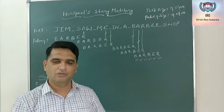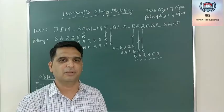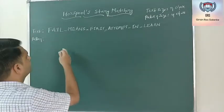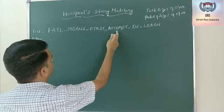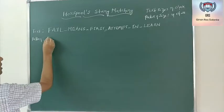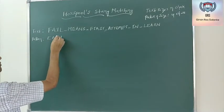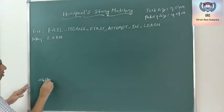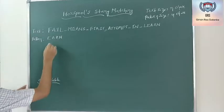Second example: text is 'fail means first attempt in learn', pattern is 'earn' of size 4. First step is to build the shift table for all characters. R is 1, A is 2, E is 3, N is 4, and all other characters get shift value equal to the pattern length of 4.